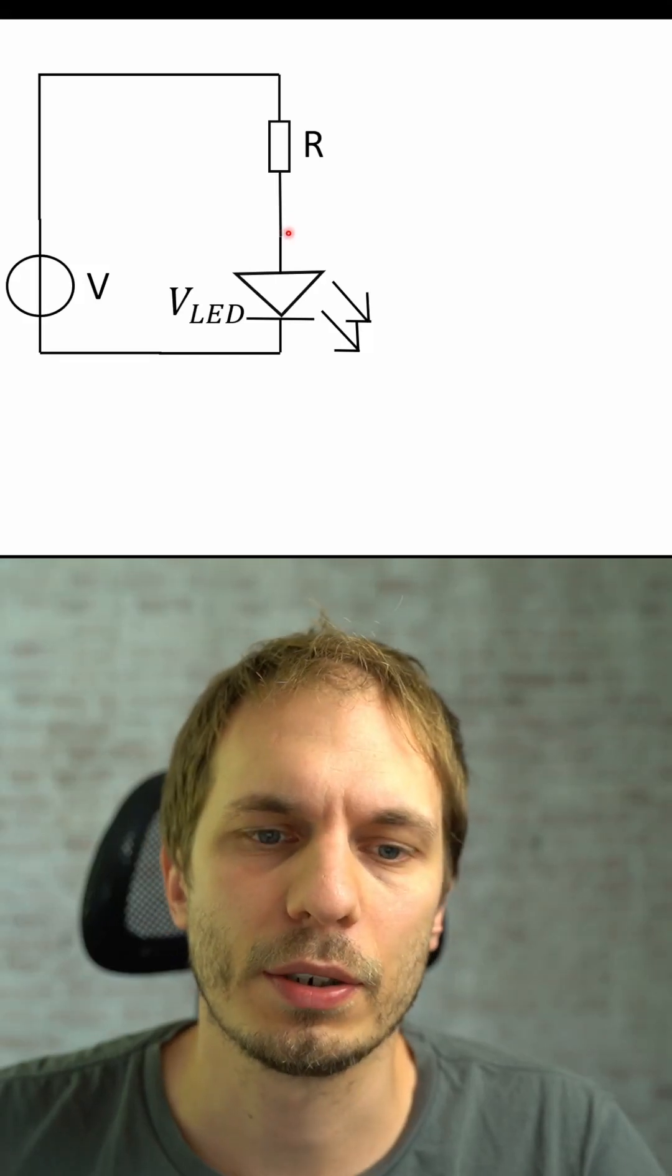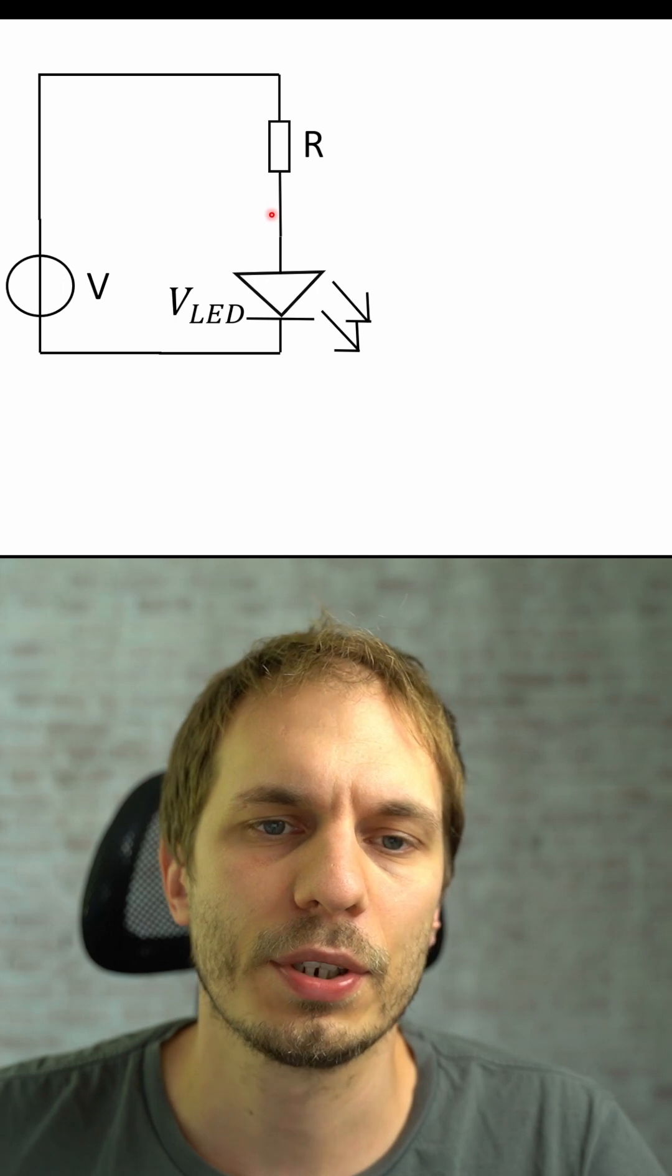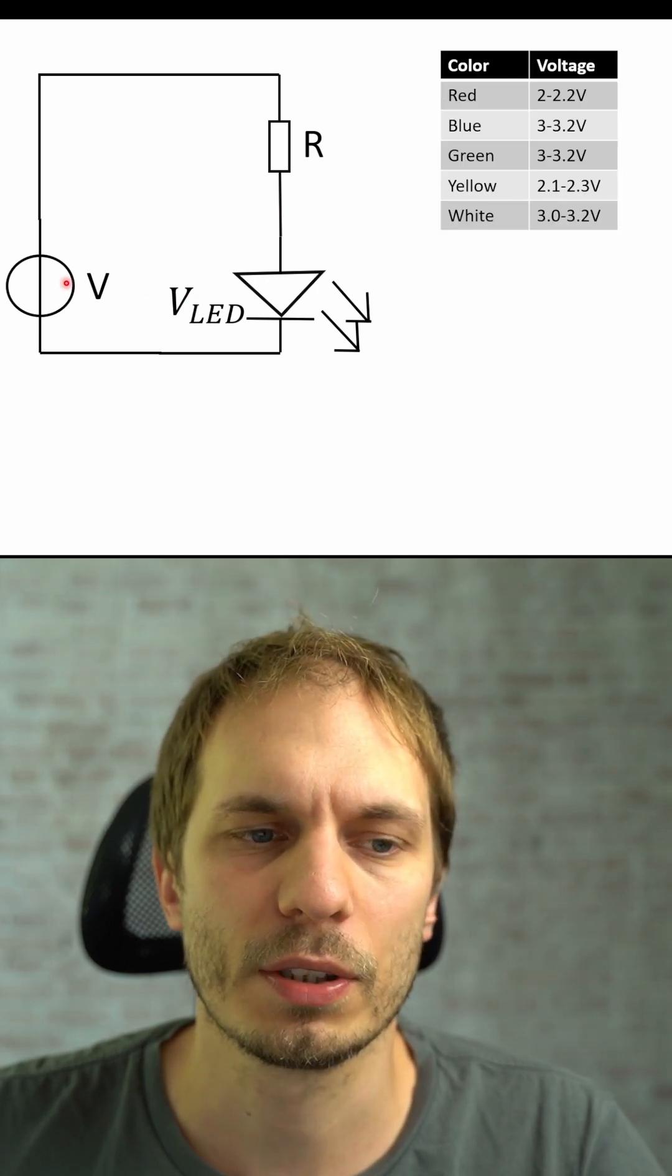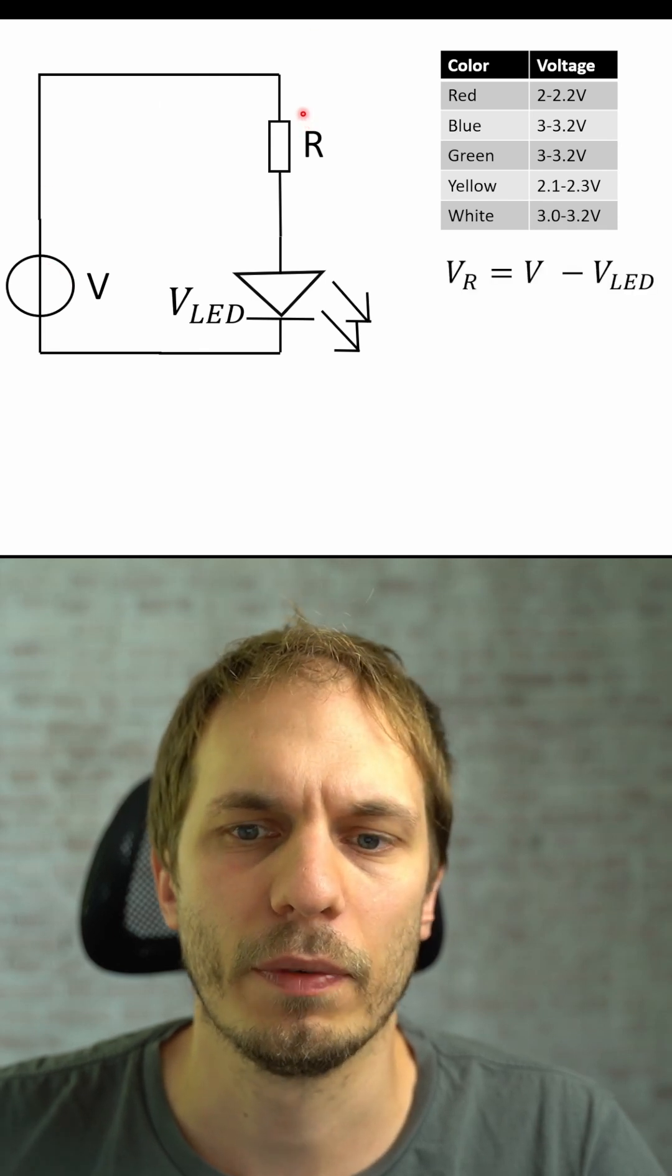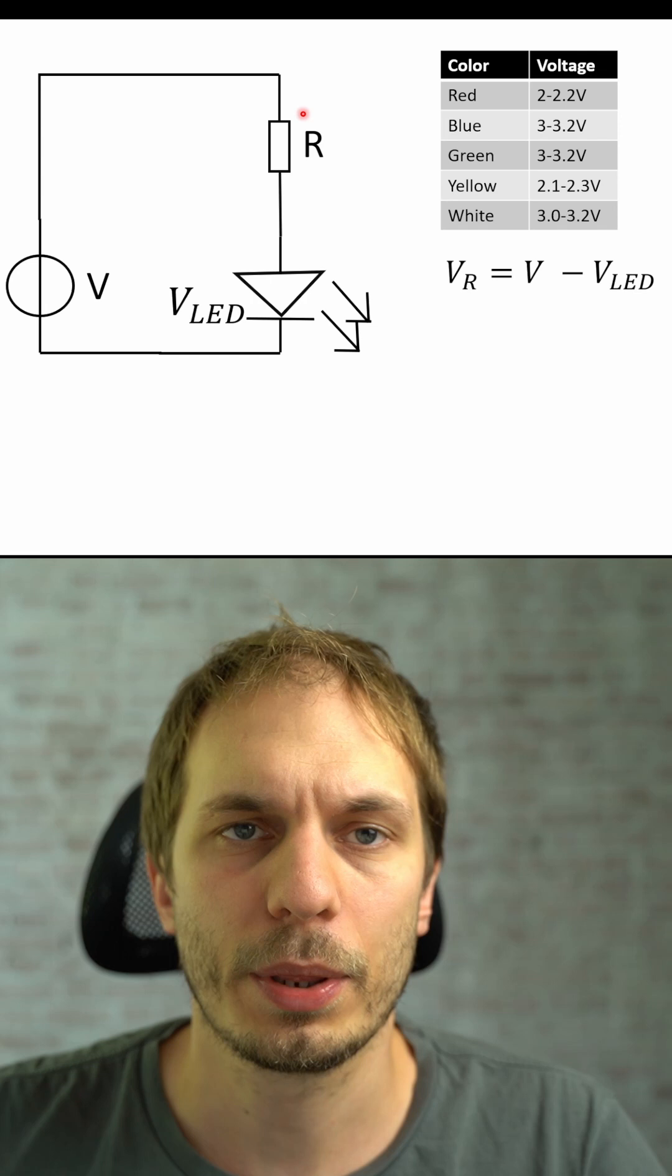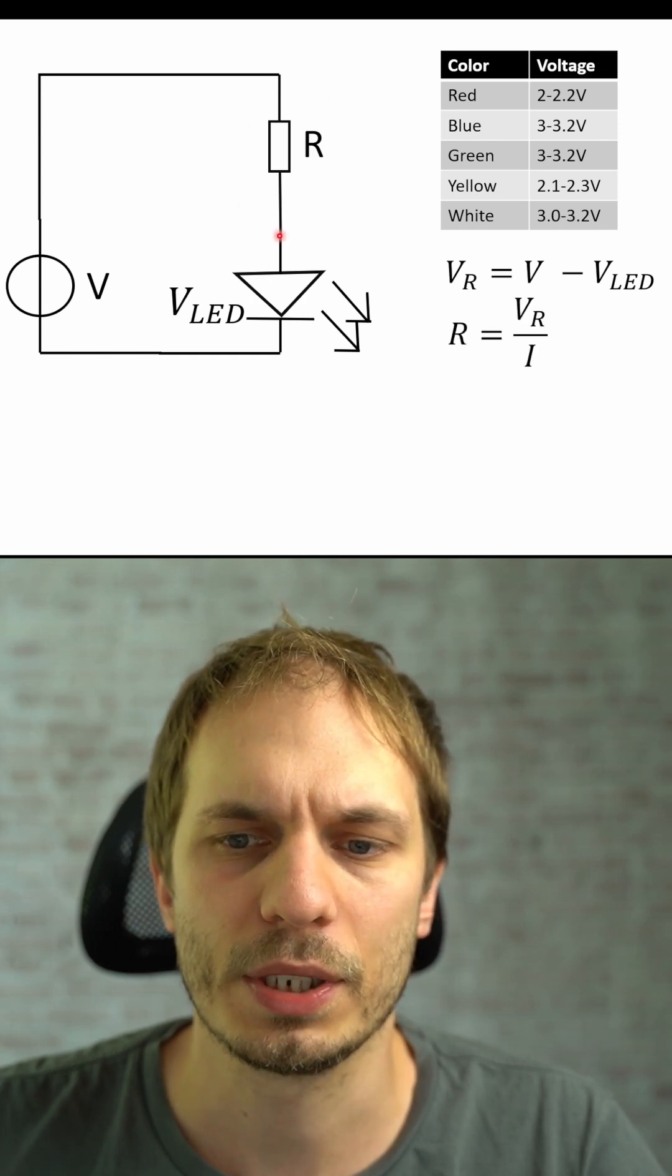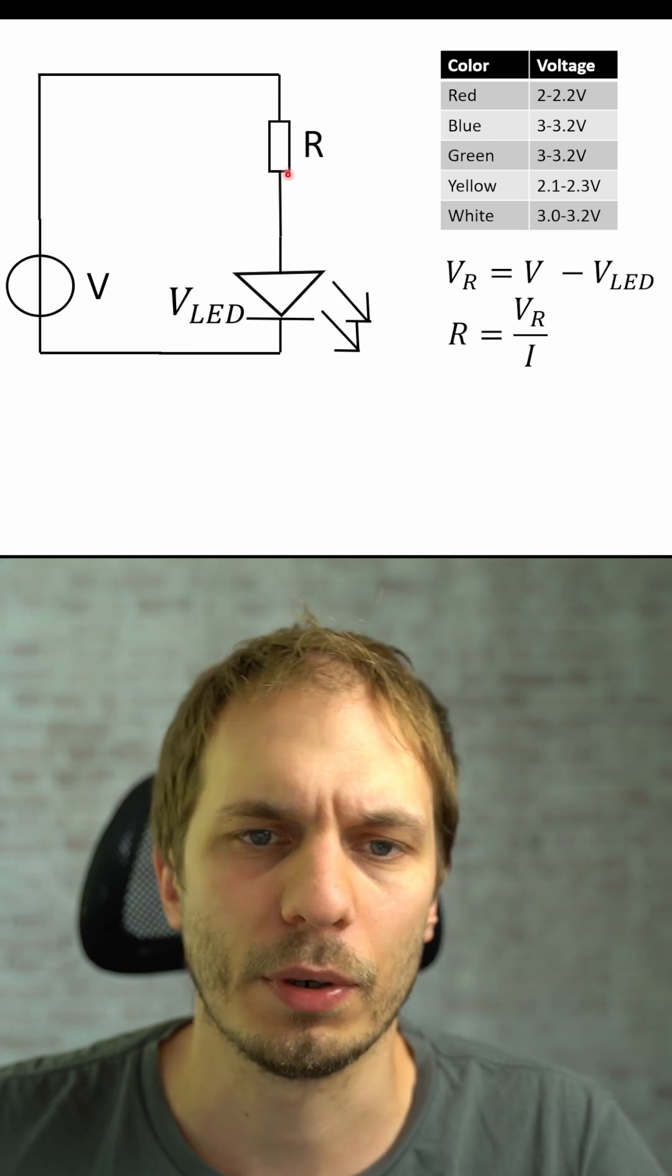If you want to calculate a current through LED in a circuit like this, you have to first subtract your LED voltage from the source voltage of your circuit. This gives you the voltage over the resistor, and with the current we want to reach and the voltage over the resistor, we can calculate the resistance we need for it.